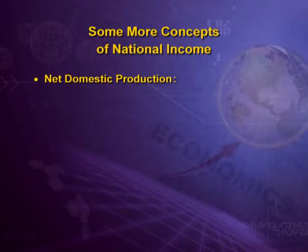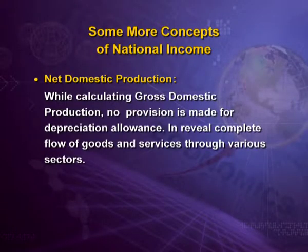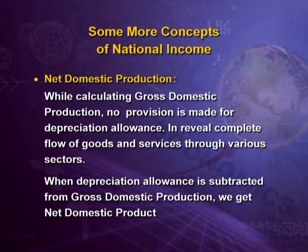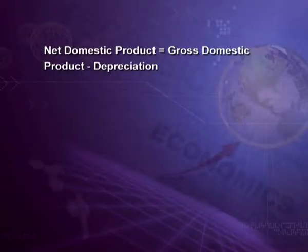Today we are starting with some more concepts of national income. First is net domestic product. While calculating gross domestic production, no provision is made for depreciation allowance — it reveals the complete flow of goods and services through various sectors. When depreciation allowance is subtracted from gross domestic production, we get net domestic production. That is: gross minus depreciation equals net. Net domestic product equals gross domestic product minus depreciation.